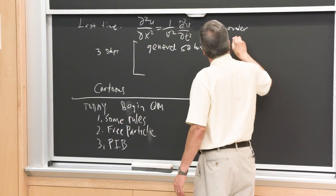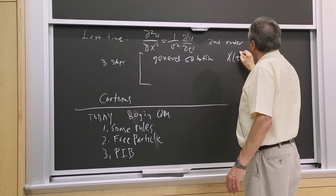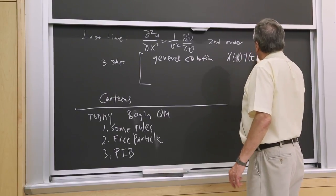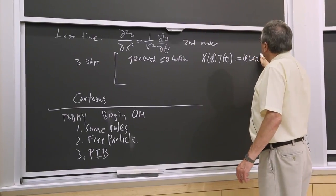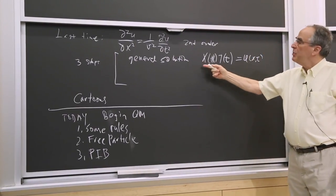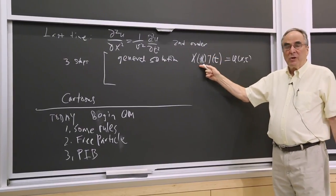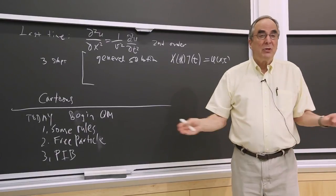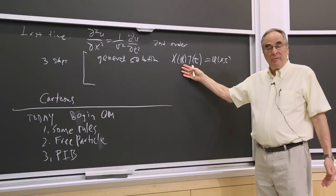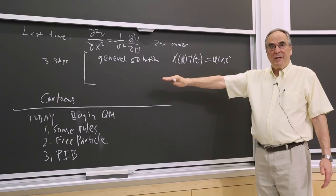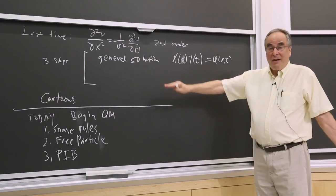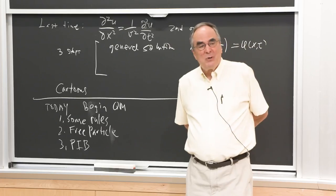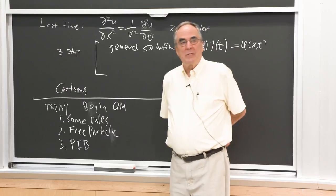The first step involves trying something where we say u of x and t is going to be treated in a separable form. If it doesn't work, you're going to get 0 — the only solution with separated variables is nothing happening. After you do the general solution, what's next?